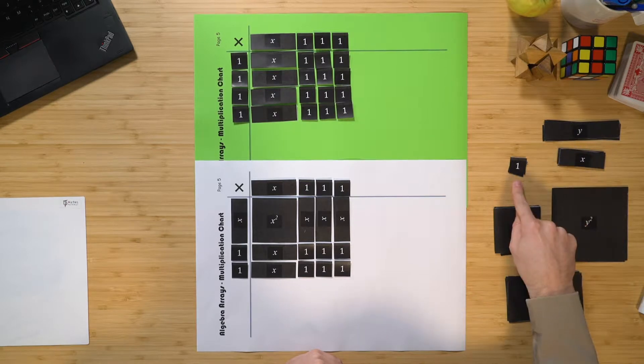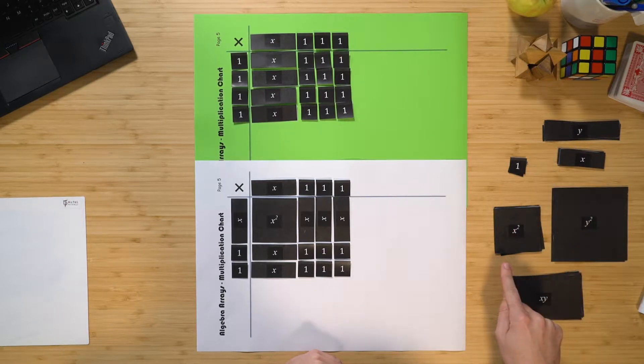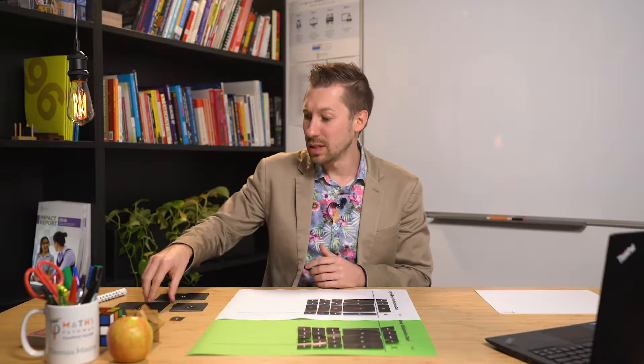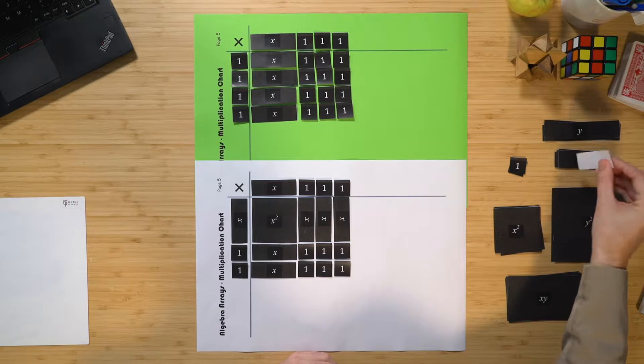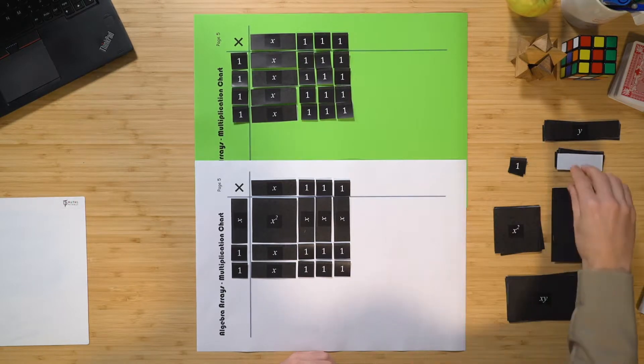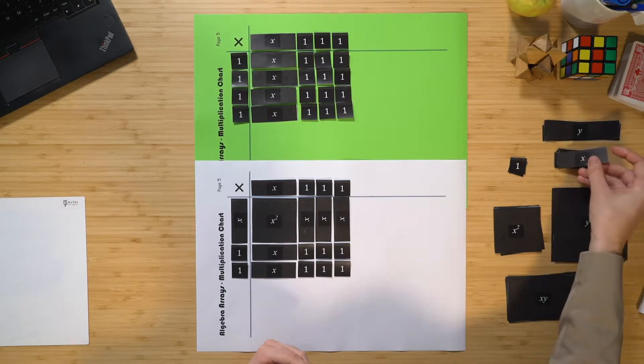Now if we remember back to the model that we used during the algebra arrays, where we looked at how to expand algebraic equations, well we had a number of different pieces. That is, we had a y, a one, an x, an x squared, a y squared, and also an xy. And the other thing that we had to remember was that if we flip this over, the x would then become a negative x as well, because that's going to help us out later on throughout this video.